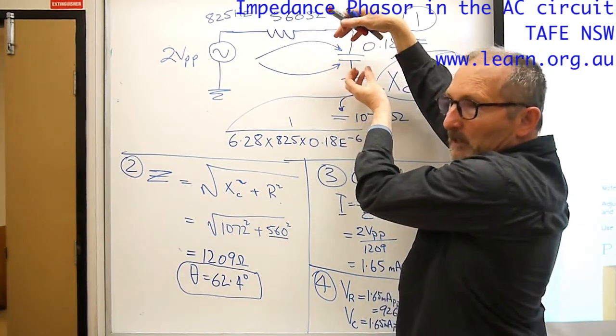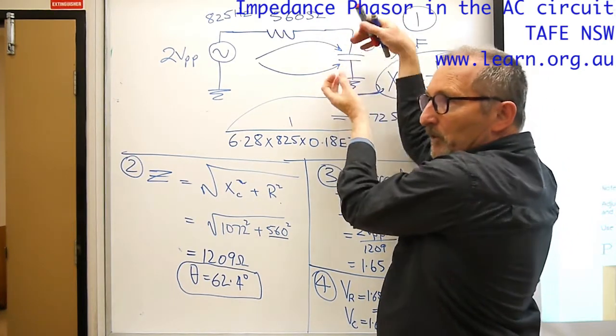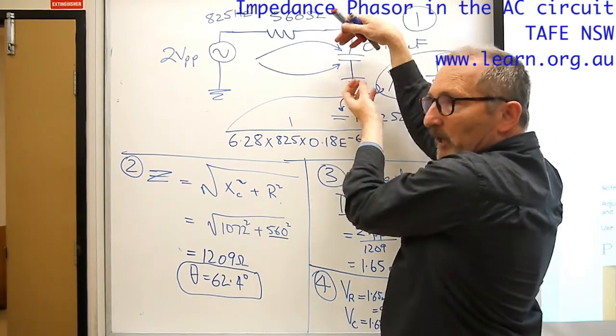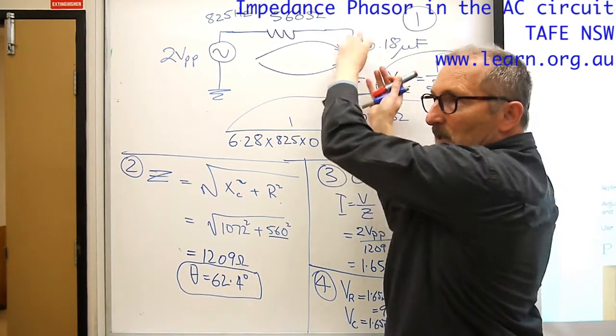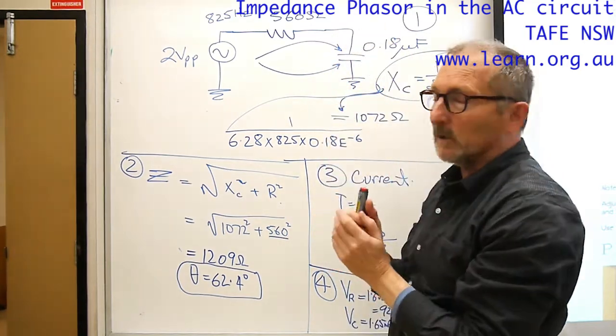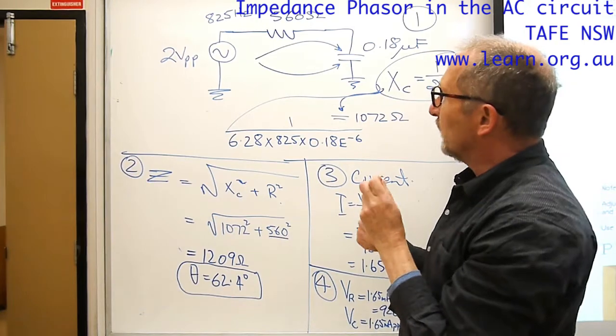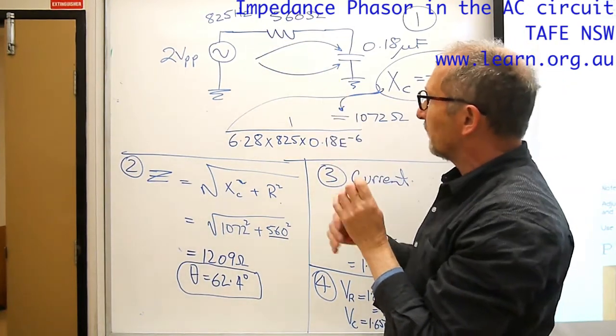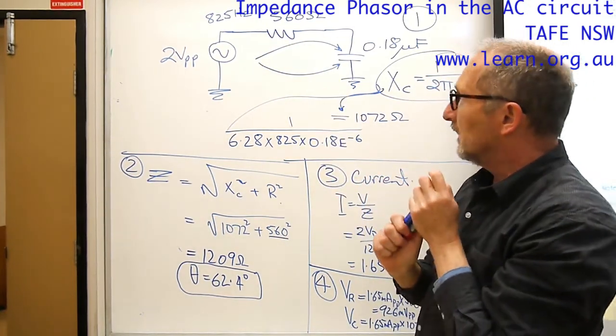825 times a second it changes direction, charging the capacitor and then discharging and recharging the capacitor in the opposite polarity. So there's always charge taking place in the circuit as the alternating current is continually changing from positive to negative, so we get this AC current flow happening in the circuit.